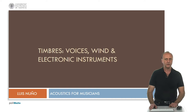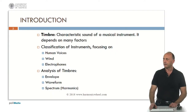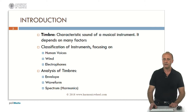In this presentation we will analyze the timbres of human voices and wind and electronic instruments. Timbre is the characteristic sound of a musical instrument. It depends on many factors. From the classification of instruments we will focus on human voices, wind instruments and electrophones. To analyze the timbres we will consider the envelope, the waveform and the spectrum, that is the harmonic series.